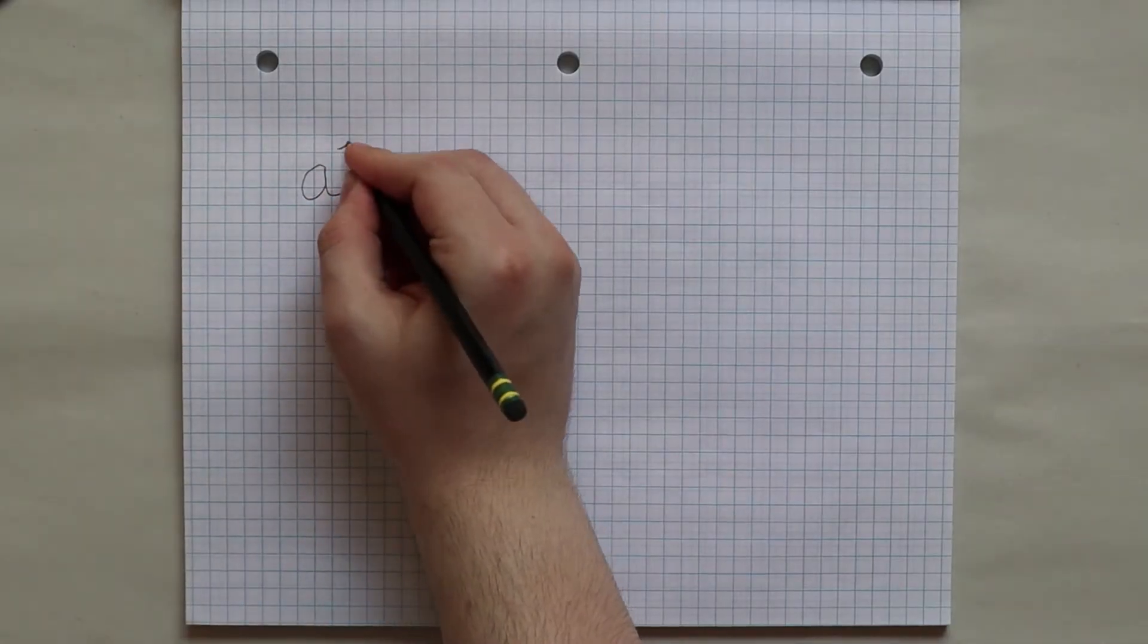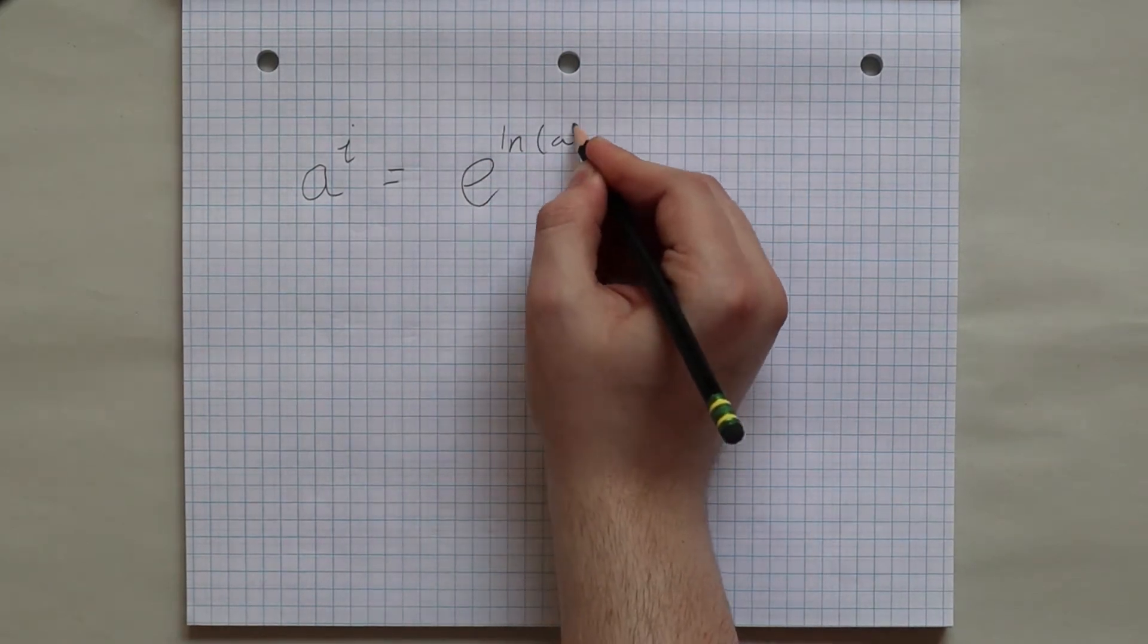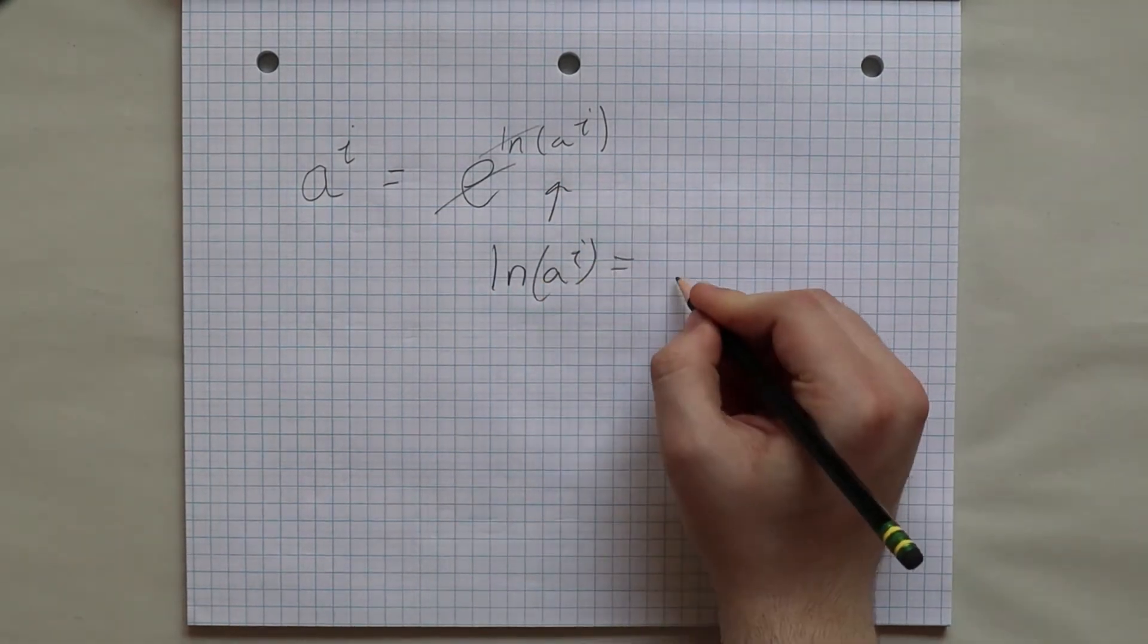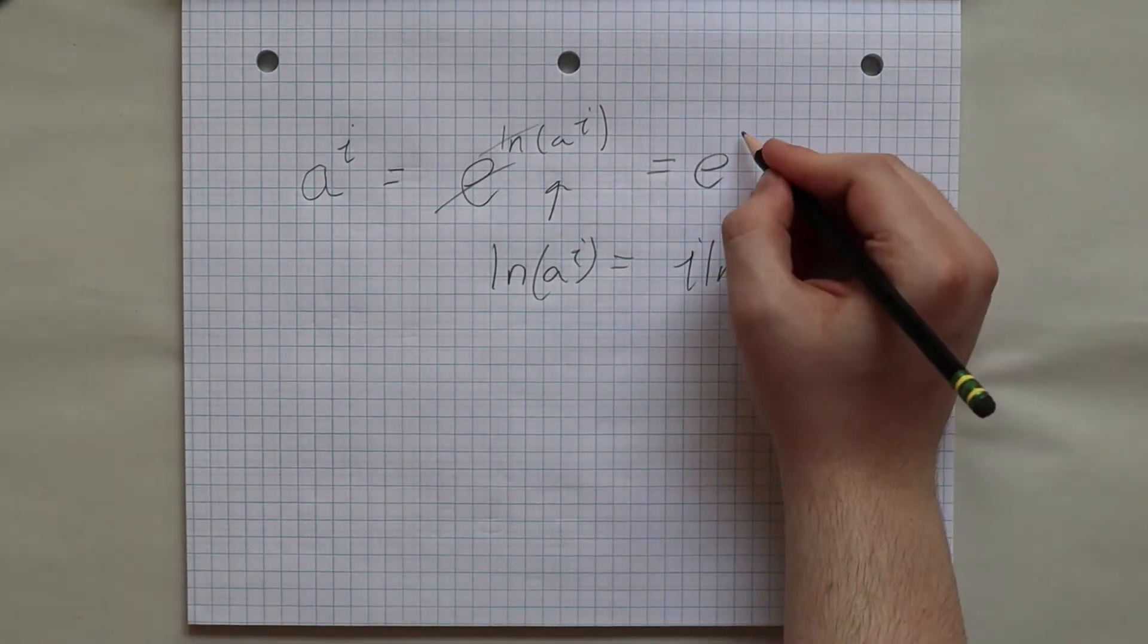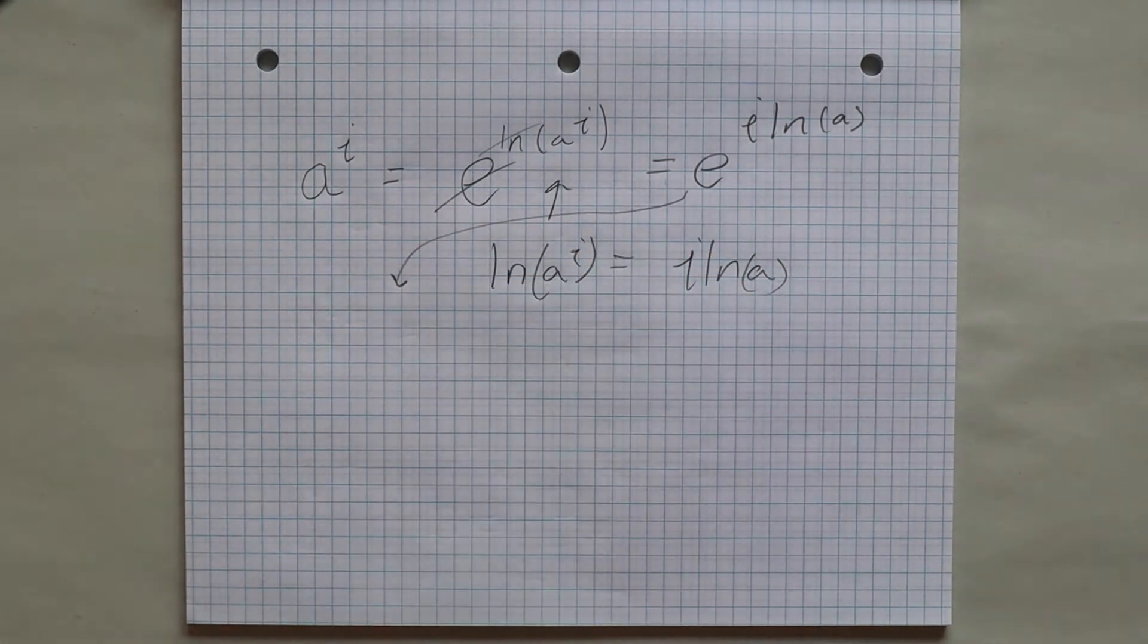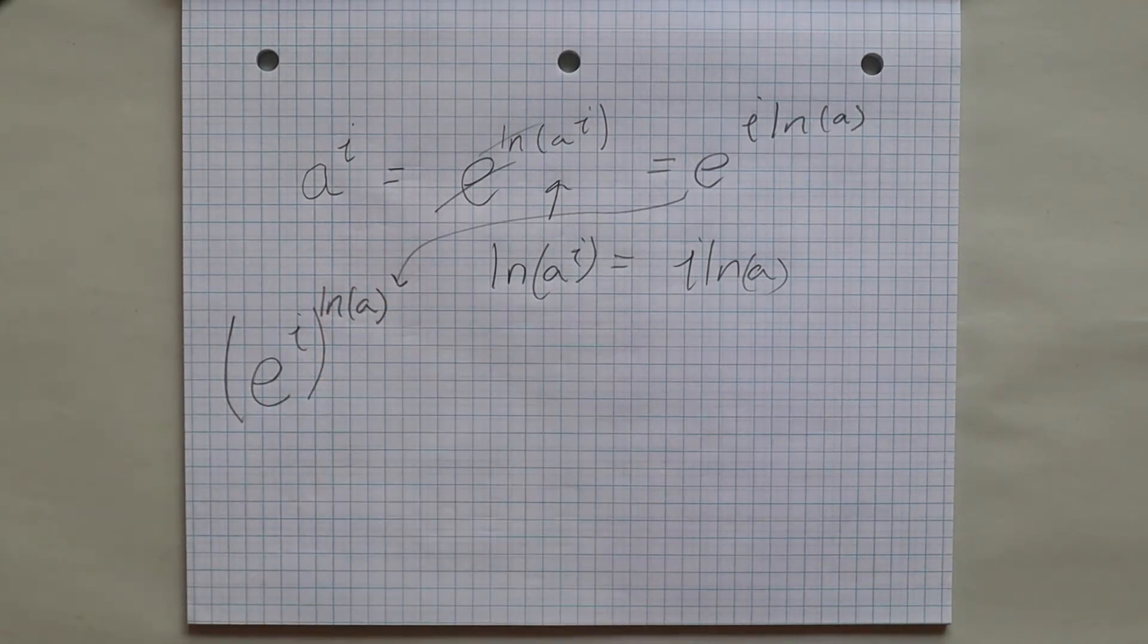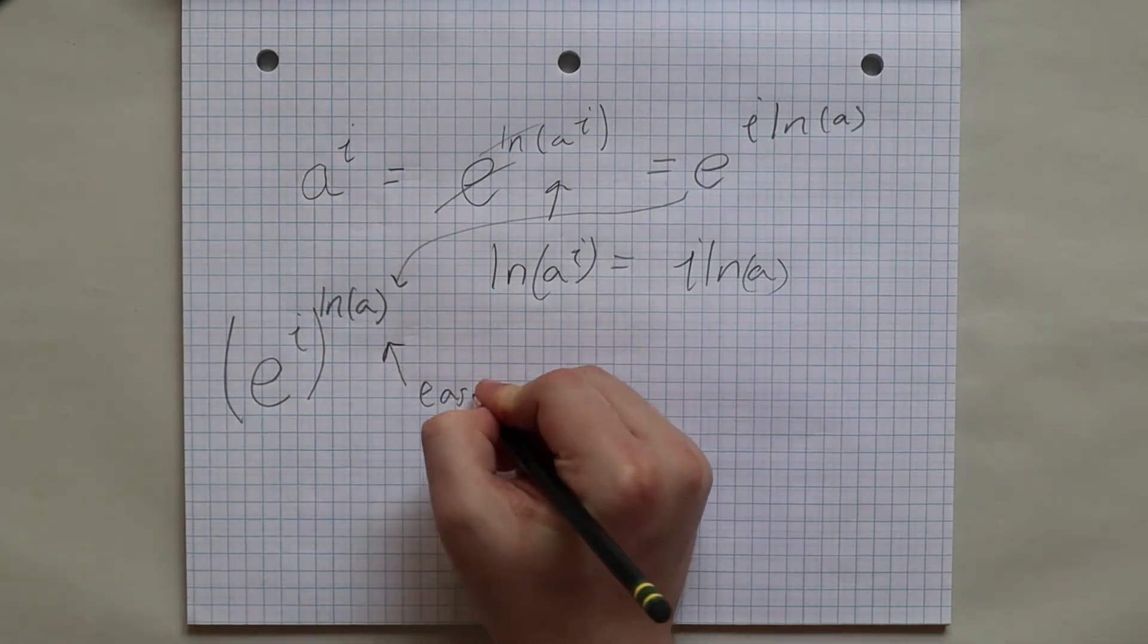Well, maybe we can look at this through other exponential properties and find something simpler. We know that this number a to the power of i is the same as e to the power of ln of a to the i, since the e and the ln cancel out. But we know from our logarithm properties that this is equal to e to the power of i times ln of a. And from our exponential properties this is equal to e to the power of i to the power of ln of a. The ln of a is easy to figure out. Let's focus on the e to the power of i part.